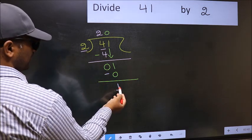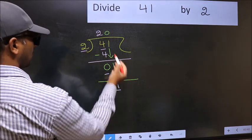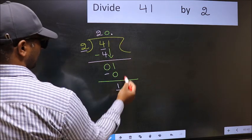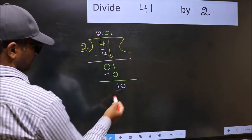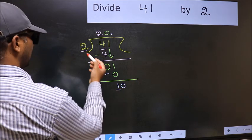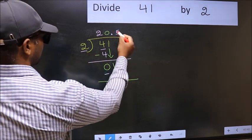Over here, we did not bring any number down. So now you can put a dot and take 0 here. So 10. When do we get 10 in 2 table? 2, 5, 10.